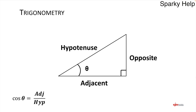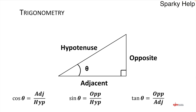The cosine of that angle is calculated from the adjacent side divided by the hypotenuse. The sine of that angle is opposite over hypotenuse. And then we have the tangent, which is opposite over the adjacent.